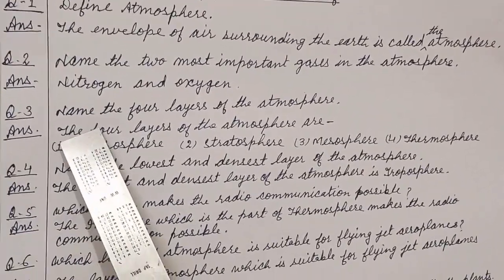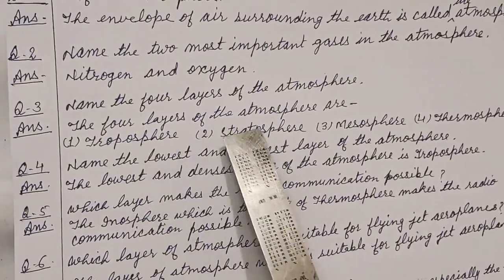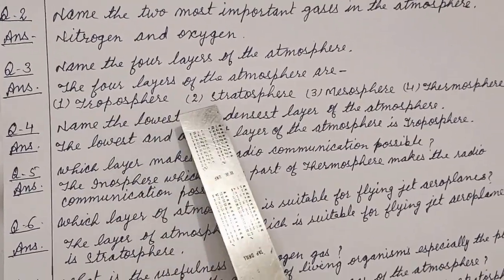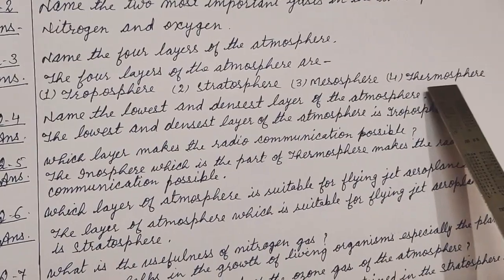Question number 3. Name the four layers of the atmosphere. The four layers of atmosphere are Number 1, Troposphere. Number 2, Stratosphere. Number 3, Mesosphere. And number 4, Thermosphere.